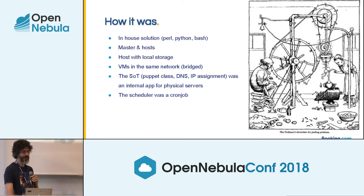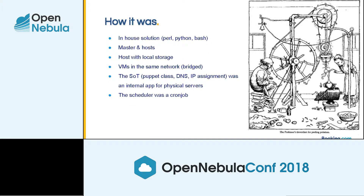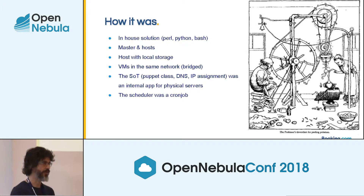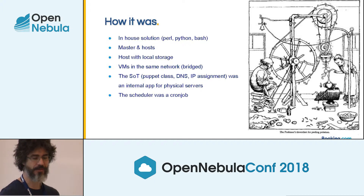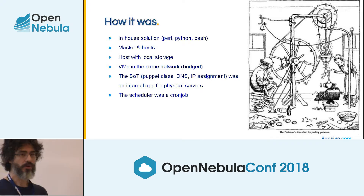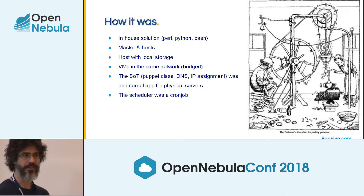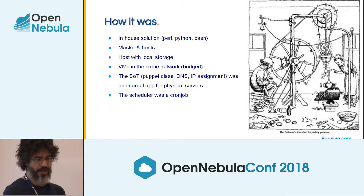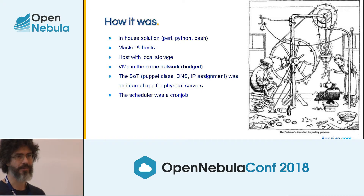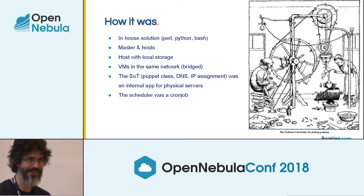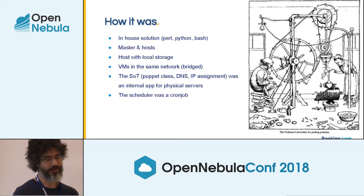I want to show how it was — it's like a Rube Goldberg machine. We had a mix of different scripted languages like Python and Bash. We had, similar to OpenNebula, a master server which deploys the VMs and the hosts where the VMs run. Every host has its local storage, so when you deploy a VM you needed to wait for it to copy to the local storage and run there. When the host is down, your VM is lost. We also had network limitations — VMs only work on the same network as the host, so when you wanted to move a VM across different hosts, you needed to pick the same rack. If the rack is down, you're just lost.